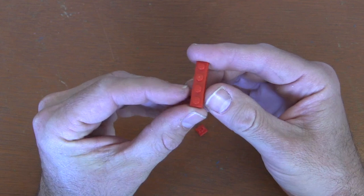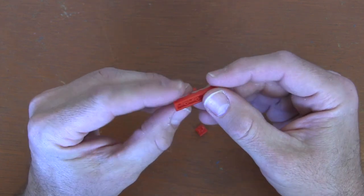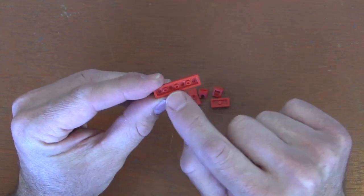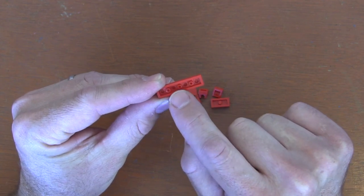For this one, we're going to start with our 1x4 plate. On the underside, underneath the 1x4 plate, you're going to see three anti-studs.